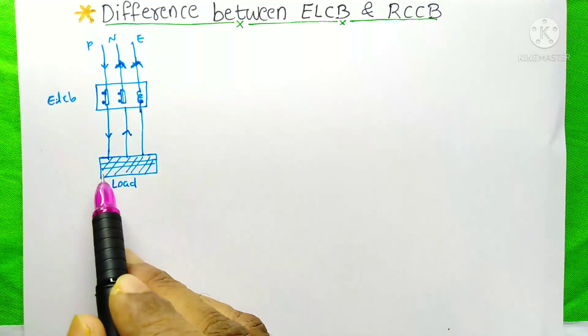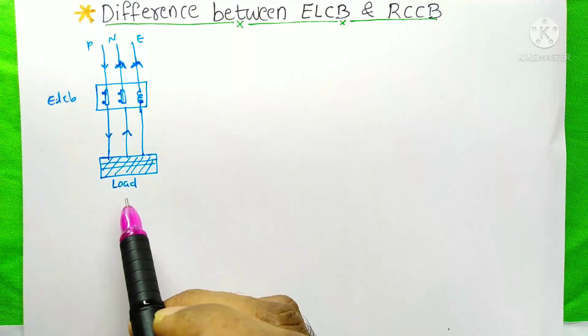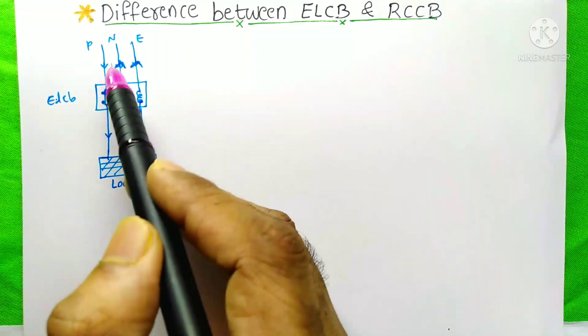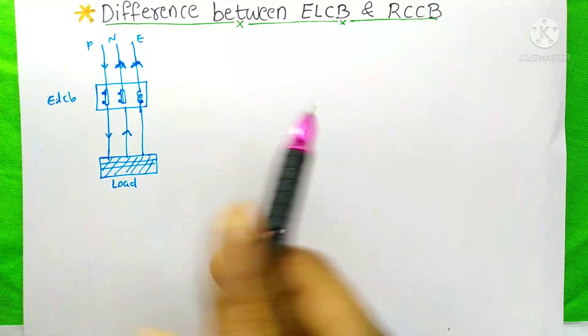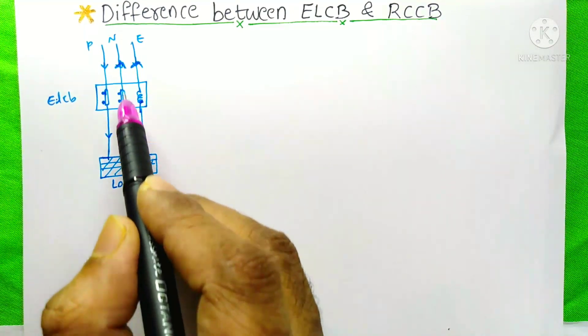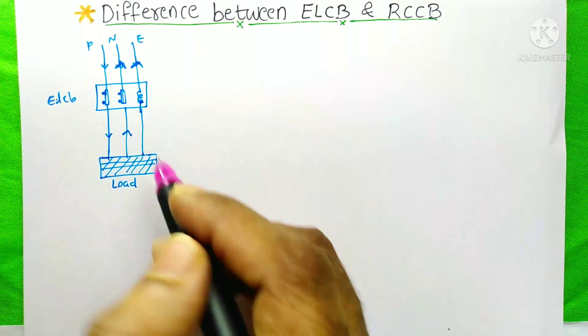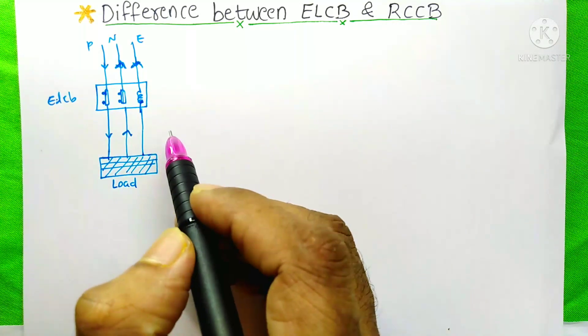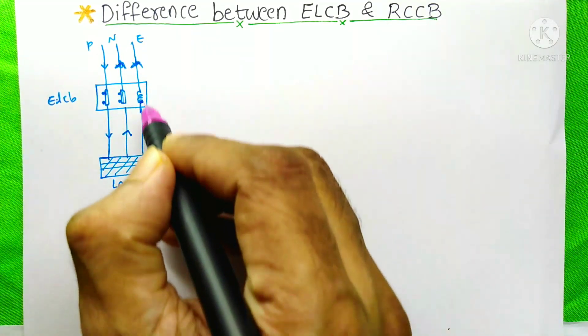Here we have a load, it is connected through an ELCB. If we switch on this load, then the current will flow up to the load, and the return current will pass through this neutral. So on the normal condition, no current will pass through this earth.